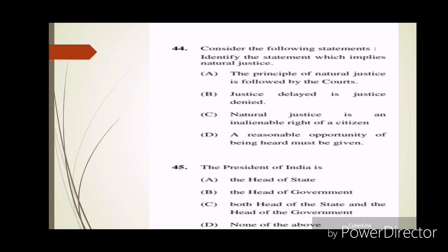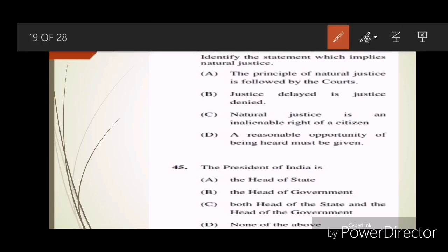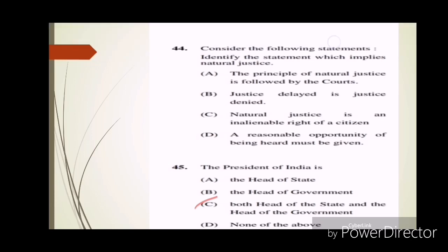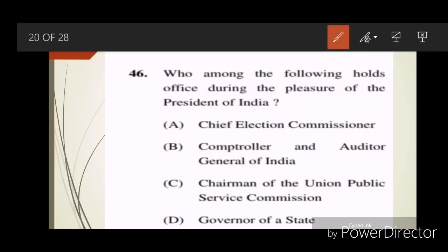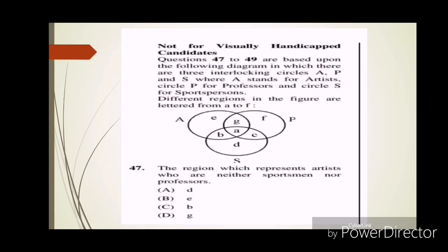Question forty-four: Consider the following statements. Identify the statement which implies natural justice. Answer C. Question forty-five: The President of India is? Answer is C, both head of the state and head of government. Question forty-six: Who among the following holds office during the pleasure of the President of India? Answer is D, Governor of a state.